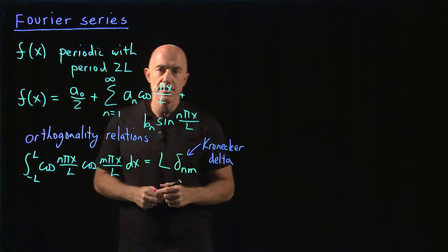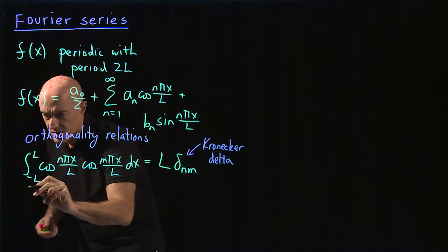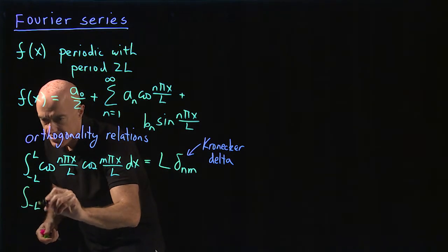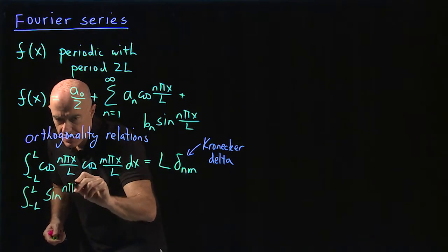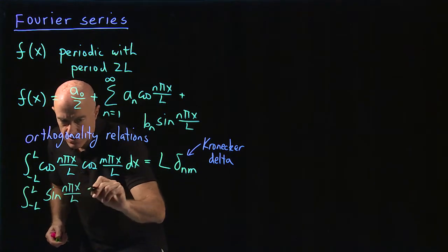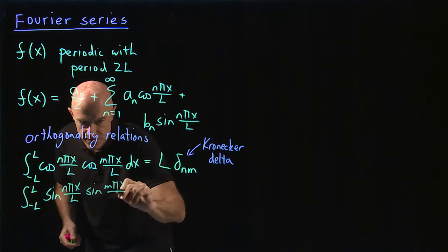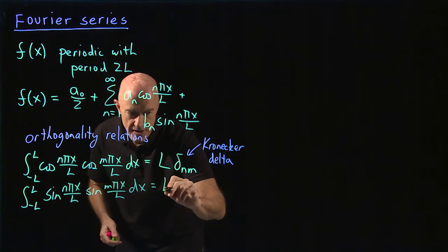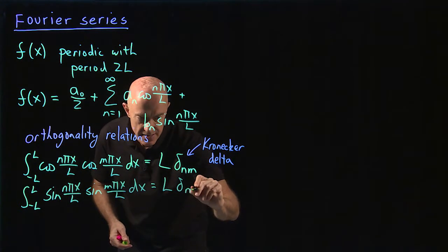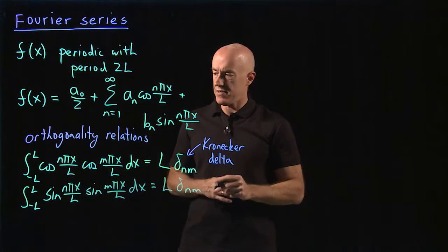I won't do that here, we'll just assume that one can do this integral. The other orthogonality relations are the integral from minus l to l, sine n pi x over l, sine m pi x over l, dx. And that, again, is equal to l times delta nm, when n and m are positive integers.